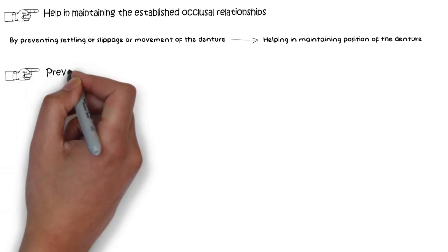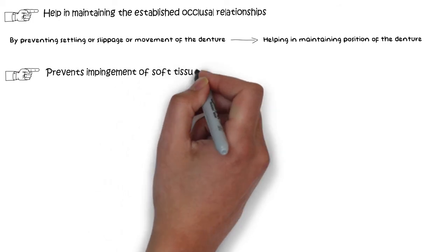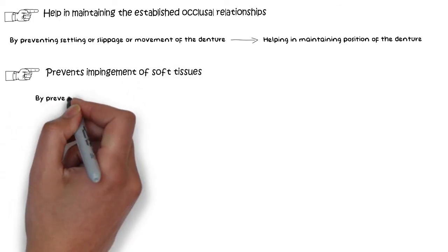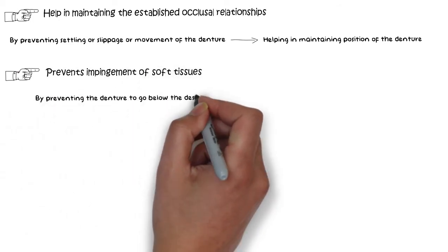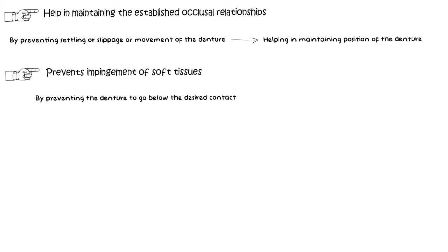Rest also prevents impingement of soft tissues by providing a stable contact with the tooth and not letting the denture go below the desired contact, otherwise it may have an impinging effect towards the gingiva.